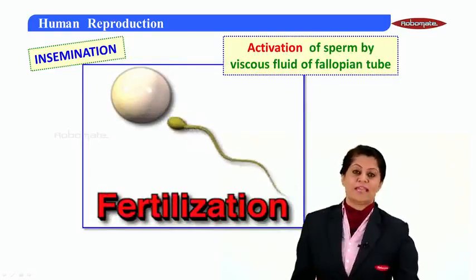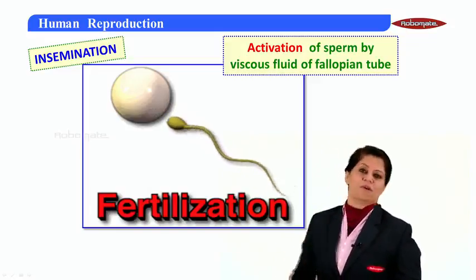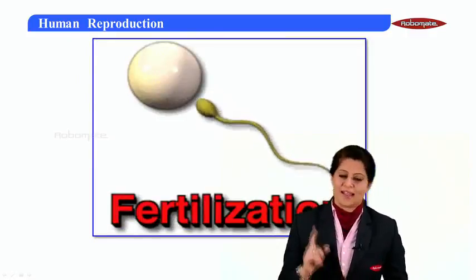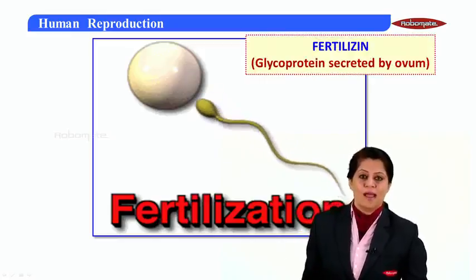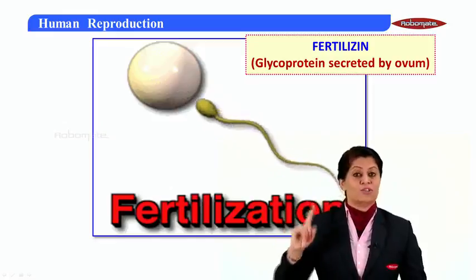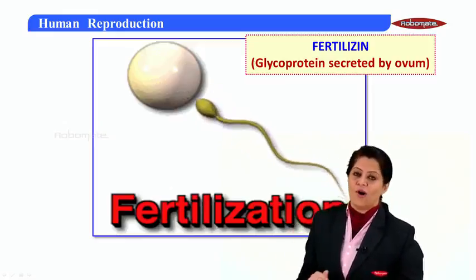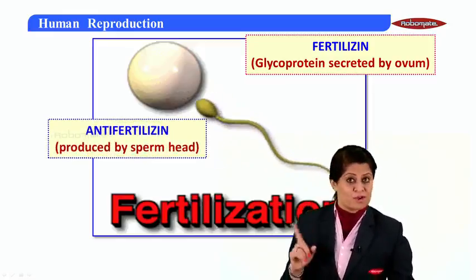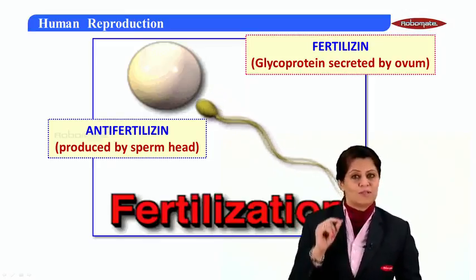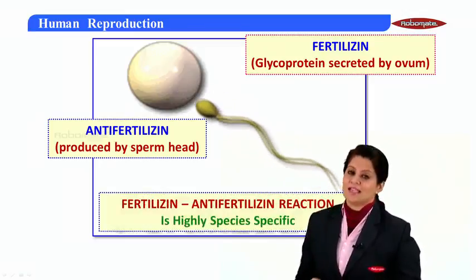After insemination, activation of sperms takes place by the fallopian tube, which releases a viscous fluid. An important step before the actual process of fertilization is what we call the fertilizin–anti-fertilizin reaction. The ovum secretes a glycoprotein called fertilizin, which recognizes human sperm. This chemical recognizes another chemical on the sperm head called anti-fertilizin, produced by the sperm head. Once it recognizes it, then only fertilization can proceed.